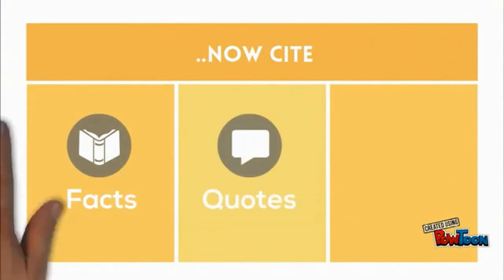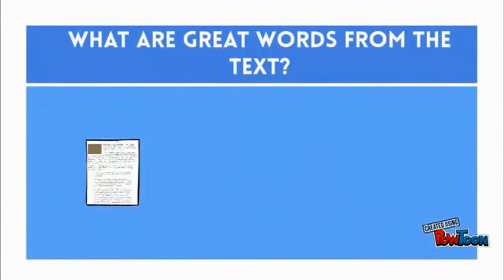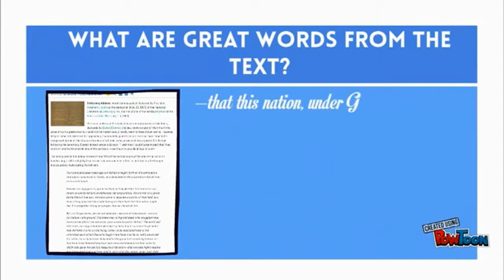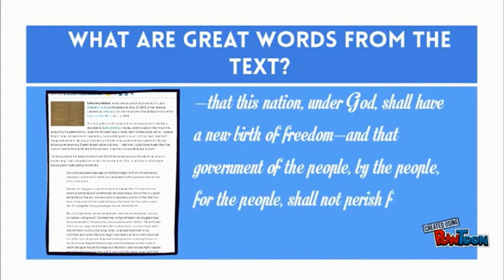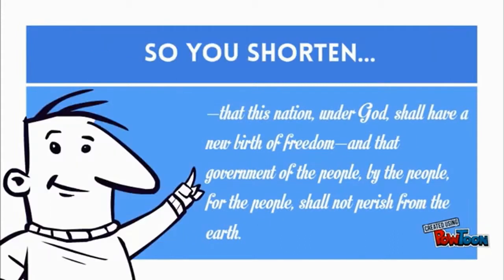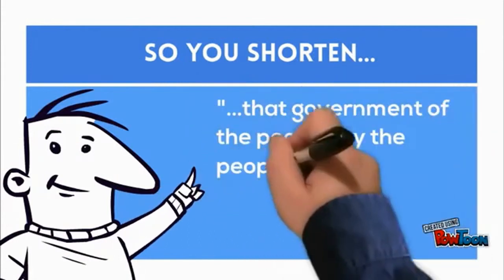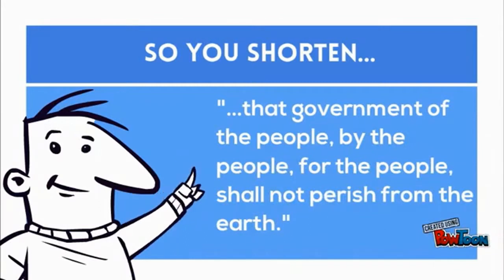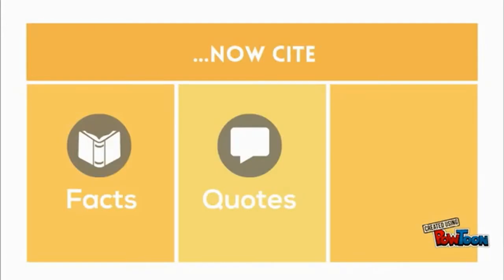Now that we've talked about facts, let's move on to quotes. Quotes are exact words of an expert — these are words that you like the precise phrasing of. For Abraham Lincoln, let's look at the Gettysburg Address: 'That this nation under God shall have a new birth of freedom, and that government of the people, by the people, for the people, shall not perish from the earth.' That's a pretty long quote, so let's take the most important part: 'That government of the people, by the people, for the people, shall not perish from the earth.' Since it's about government, let's use it to back up why he helped end the Civil War.